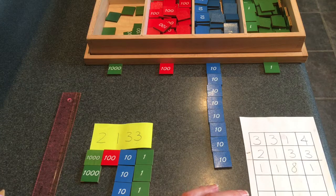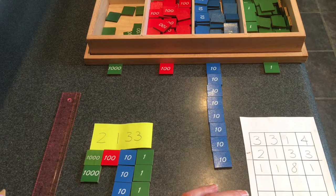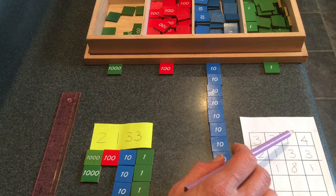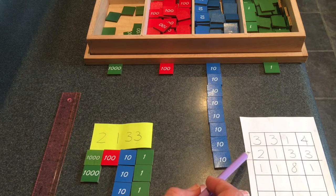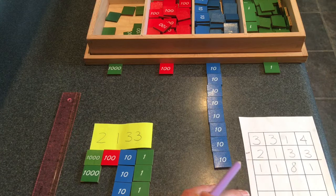Can you read the problem back? That's right. We had three thousand, three hundred, one ten, and four units minus two thousand, one hundred, three tens, and three units.